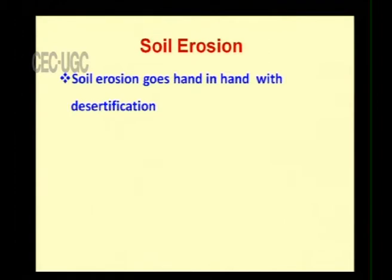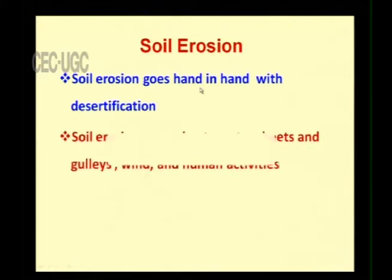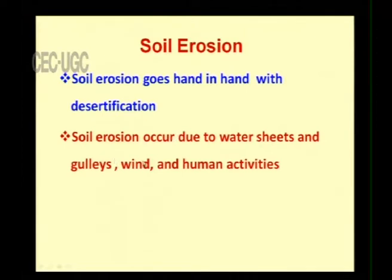Soil erosion goes hand in hand with desertification. Soil erosion occurs due to water sheets and gullies, wind, and human activities. Water sheets refer to water flowing over a particular place; gullies are small canals of water. All these are responsible for soil erosion, and desertification occurs where soil erosion and variable rainfall combine.